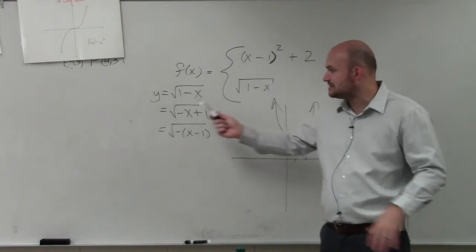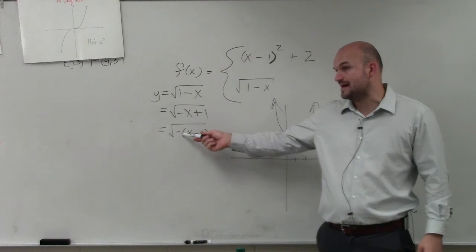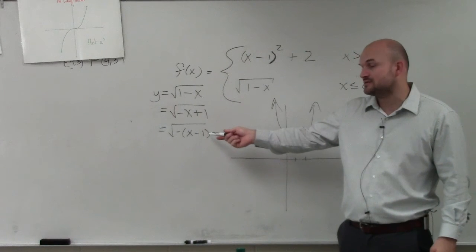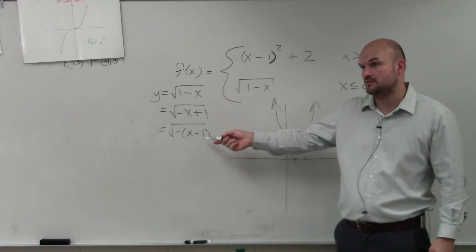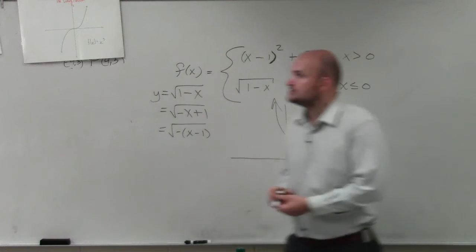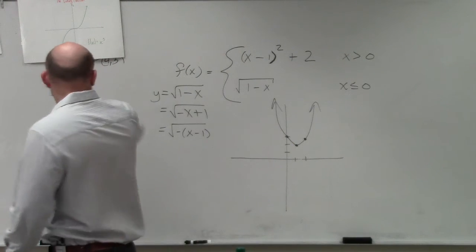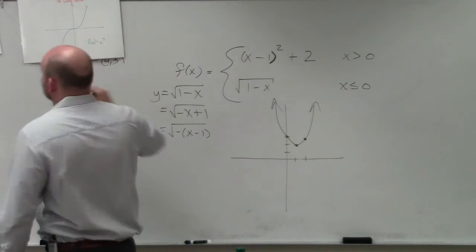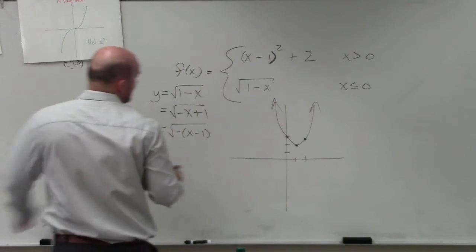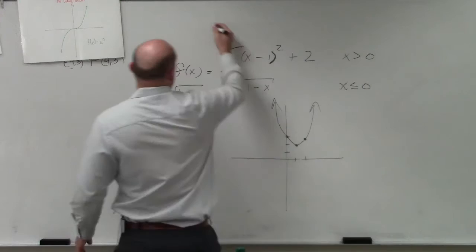So now, when I'm identifying my transformations, I am reflecting the graph across the y-axis and I'm shifting it one unit to the right. So if you guys look at this, that was over there. So that graph, I guess you guys can't see it over there. But remember, the square root graph looks like this.